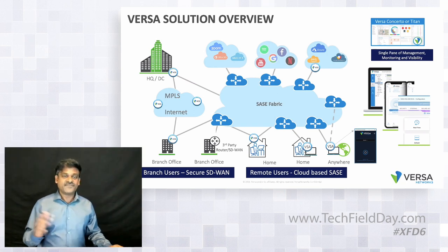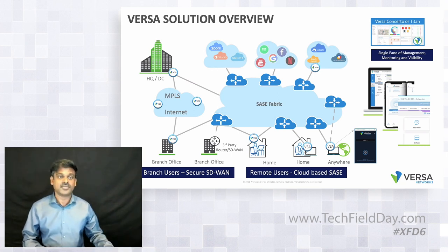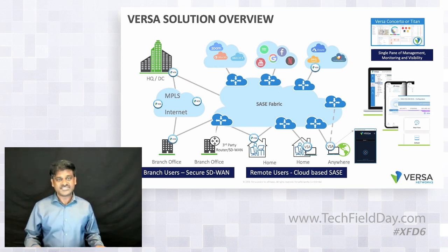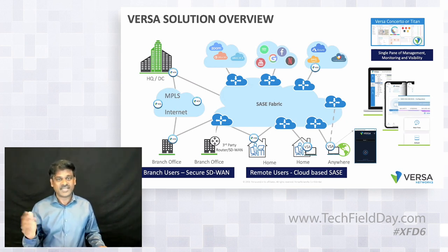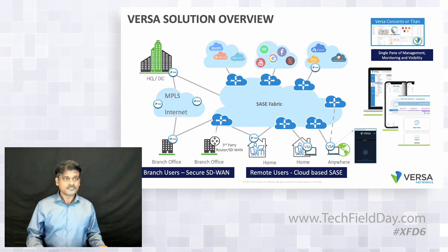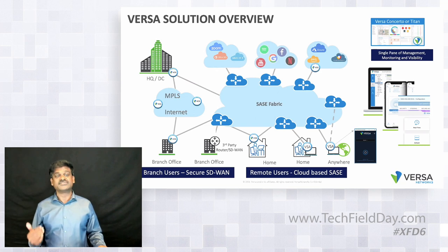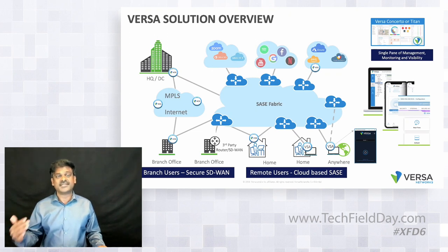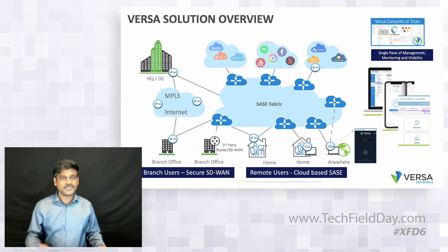For remote users, Versa supports different methods. It could be a small-footprint VAS instance at the user's device location, or the Versa Secure Access agent — a software agent for mobile or laptop devices. We also support agentless mechanisms such as app reverse proxy, PAC file, and application proxy. For users coming from legacy branch office networks using a legacy router, we support IPsec or GRE tunnel to bring traffic over to the SASE fabric, which then routes it to the appropriate destination.